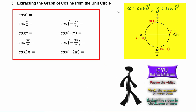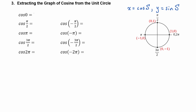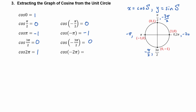Okay, let's see how you did. We know that the cosine of zero is equal to one, the cosine of pi over two is zero, cosine of pi is negative one, cosine of three pi over two is zero, and cosine of two pi is one. Then going in the negative direction, negative pi over two is coterminal with three pi over two so the cosine will be zero, the cosine of negative pi is negative one, negative three pi over two is coterminal with pi over two so the cosine will be zero there, and negative two pi is coterminal with zero and two pi so we know the cosine will be one there.